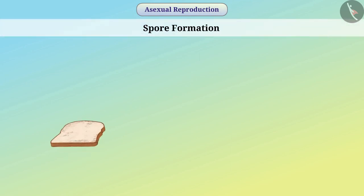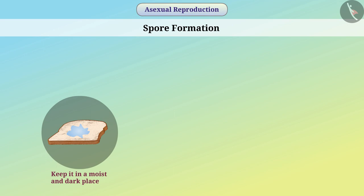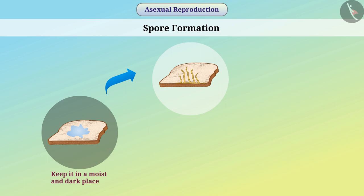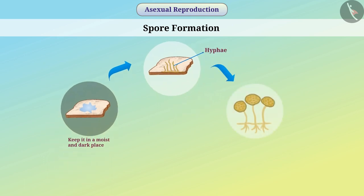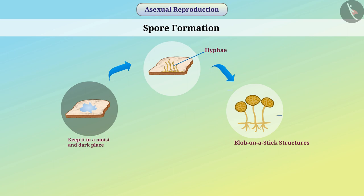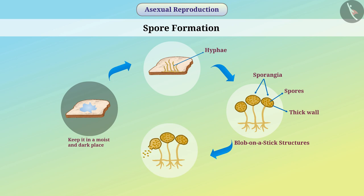Spore Formation. If you take a piece of bread, soak it in water, and keep it in a moist and dark place, within one or two days you will see some thread-like structures developing on it. These are the hyphae of Rhizopus. If you observe the vertical fibers with a microscope, you will see blob-on-a-stick structures called sporangia. Special cells found in these structures are called spores. A thick wall protects the spores. Under favourable conditions, this wall breaks and spores get spread. At appropriate temperatures and humidity, these spores begin to grow and form new fungus. This method of reproduction is known as spore formation.